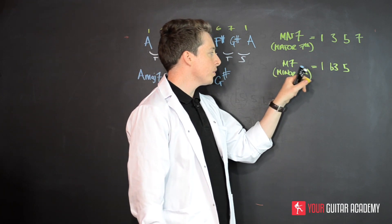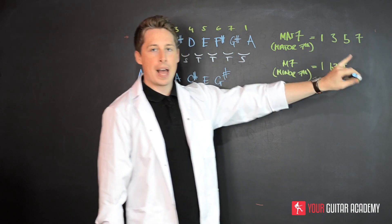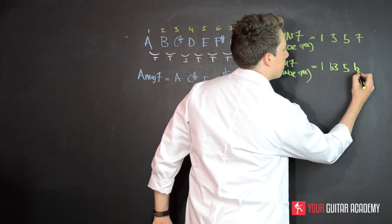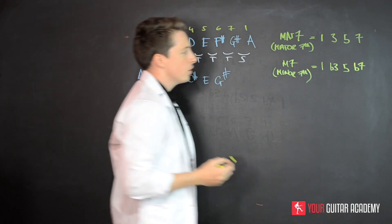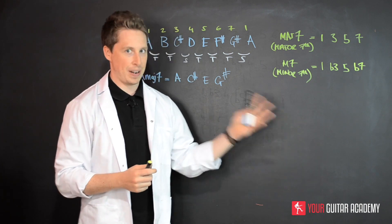Now when it comes to seventh, we don't just add a seven. Instead, we add a flat seven. Now the reason we add a flat seven is because in the minor scale, there's a flat seventh.